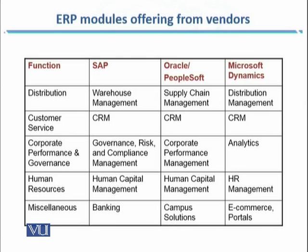For human resources functions and processes, the SAP module is HCM, Human Capital Management. The same applies in the case of Oracle. For Microsoft Dynamics, it is HR Management. For miscellaneous functions, the additional module SAP has is Banking. Oracle has a Campus Solution, and Microsoft Dynamics has e-commerce and portal modules available for you to buy and use.